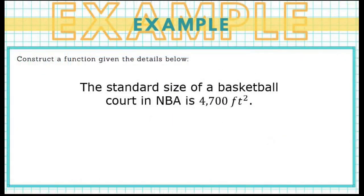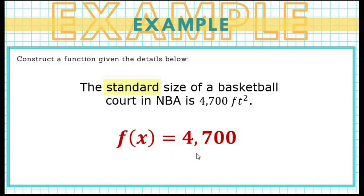We proceed to example number one. The standard size of a basketball court in the NBA is 4,700 square feet. You need to identify the keyword synonymous to constant. If you identified 'standard,' then you are correct. Standard is synonymous to constant because standard means true to all. So to represent this as a constant function, we write it as f of x equals 4,700. In creating the constant function, you need not include the unit of measurement. So the answer is f of x equals 4,700.